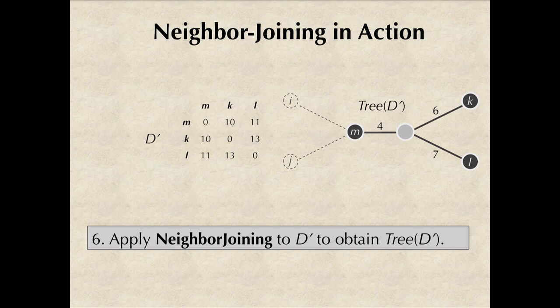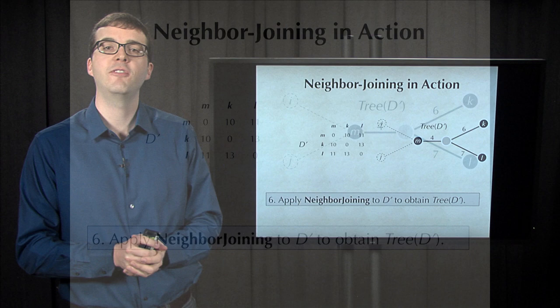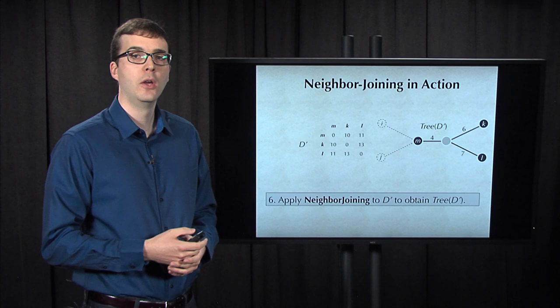If we return to neighbor-joining, now that we have a smaller matrix, we can apply the neighbor-joining algorithm recursively to D' and obtain the tree on the right that fits this matrix D'. Once we have this tree, we can simply reattach the limbs of I and J using the limb lengths that we previously computed.